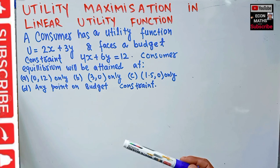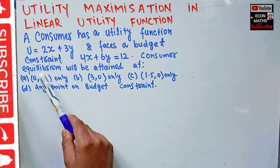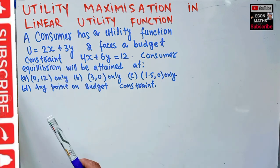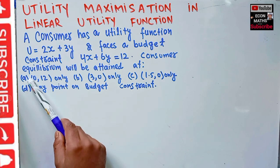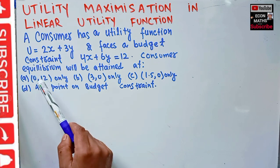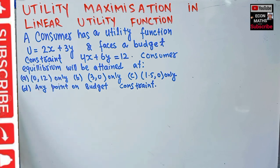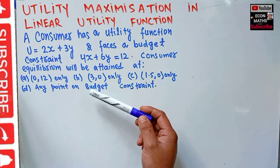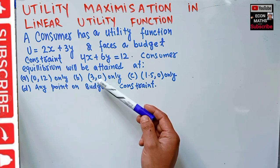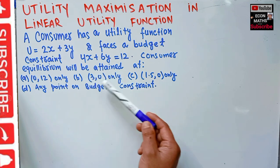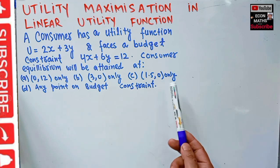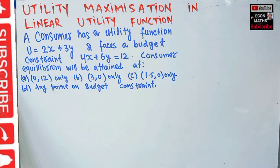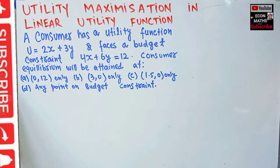We have to find at what point consumer equilibrium will be attained. The options given are: first, when the consumer buys 0 units of good x and 12 units of good y only; second, when the consumer buys 3 units of good x and 0 units of good y; and the fourth option is any point on the budget constraint. Let us see how to solve this kind of question.